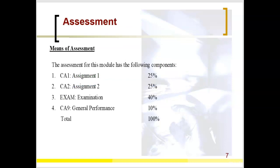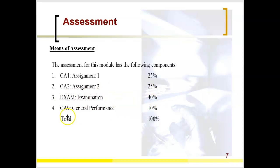The assessments for this module are as follows: CA1 comprises 25%, CA2 comprises 25%, the exam is 40%, and general performance is 10%, making up 100% in total. Due to the COVID-19 situation, your exam may be conducted online.